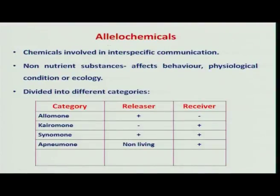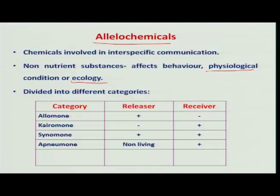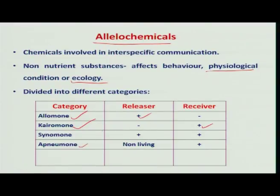Here we have allelochemicals, which are the chemicals used for interspecific communication and they are going to change the insect behavior and also ecology. We have few categories: one is allomone, where the releaser is going to benefit by releasing the chemical, not the receiver. In the case of kairomone, the receiver is going to benefit. In the case of synomone, both the releaser and receiver benefit. In another category, anemones are produced by non-living substances and only the receiver benefits.